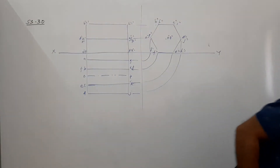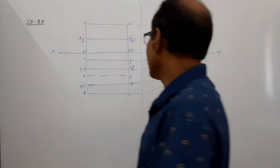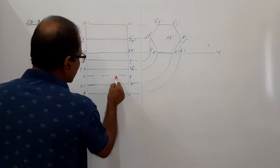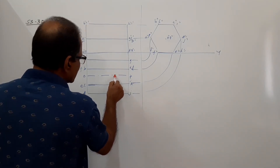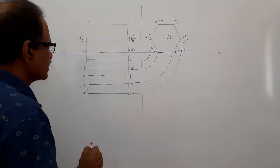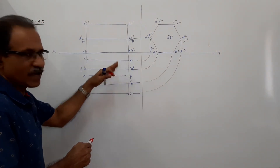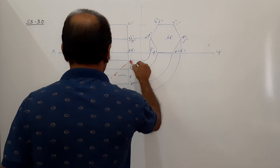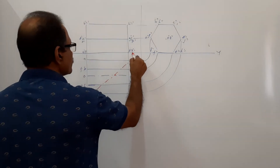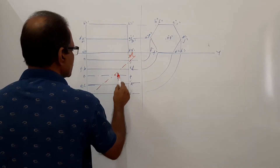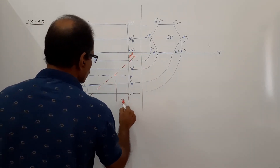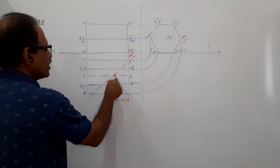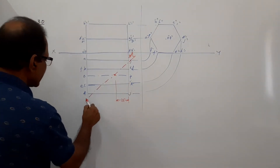This is cut by a plane perpendicular to HP and inclined to VP by 30 degrees, passing through a point on the axis 25 mm away from this end. So the cutting plane will go like this — this distance is 25 mm from this end.